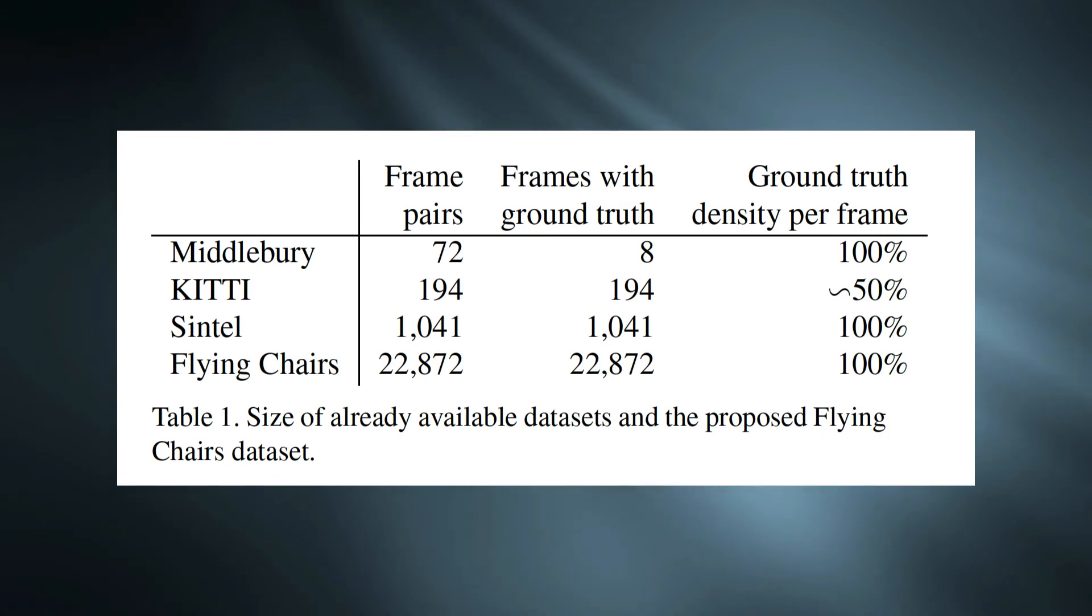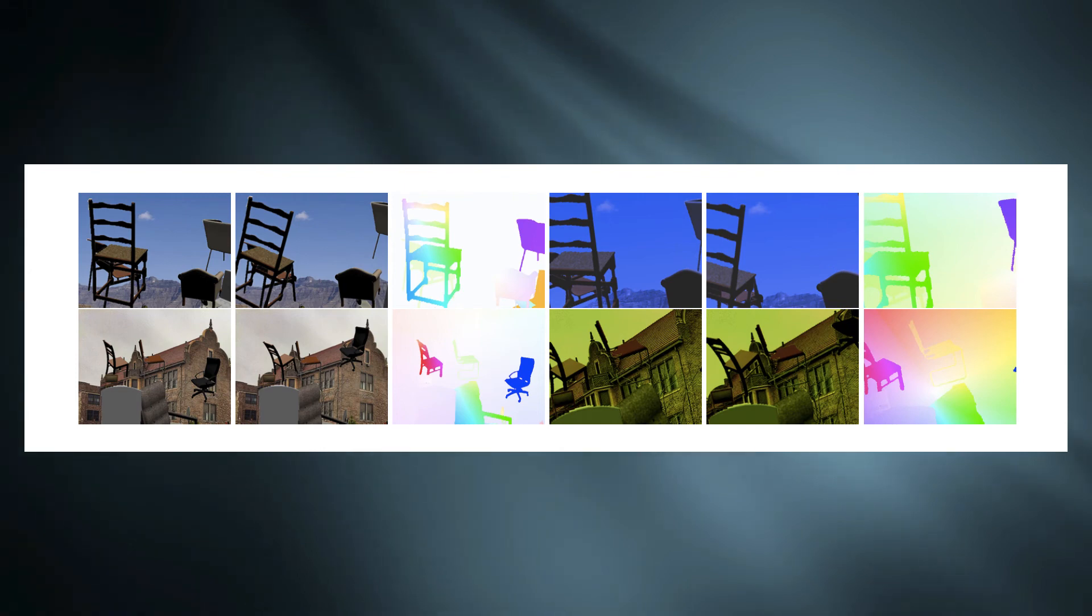The first three are very small and not suitable for neural network training. This is why the authors of the paper have constructed Flying Chairs dataset. The images are collected from Flickr and 3D rendering of chairs. It is significantly larger than the other three.